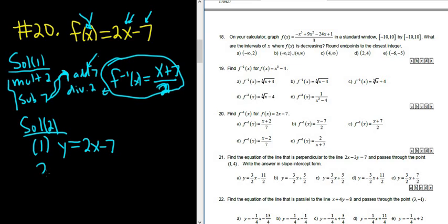And then the second step is to switch your x and y. So this is x equals 2y minus 7. And then the third step is to solve for y. So to solve this for y, we start by adding 7, so plus 7.